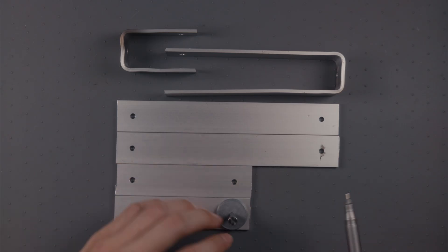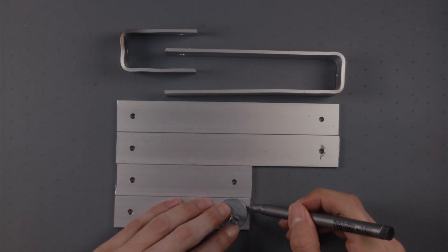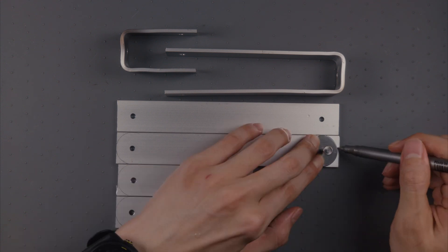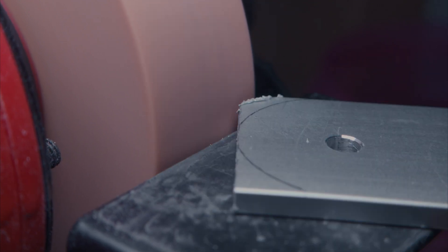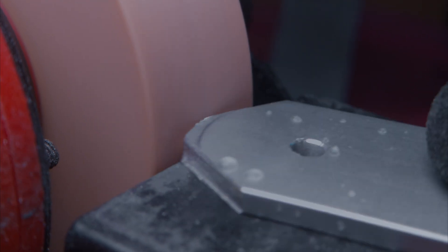The corners of the flat bars needed to be rounded so I printed a small template to mark the radiuses. Grinding the corners on my mini bench grinder was crazy slow so I sawed the corners off to speed things up. It still took ages.